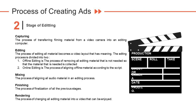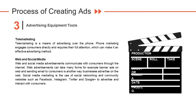The editing stage has five points. First is capturing — the process of transferring filming material from a video camera into an editing computer. Second is editing — the process of editing all materials into a meaningful video layout, divided into offline editing (removing unneeded material) and online editing (aligning offline material according to the script). Third is mixing — aligning all audio material in the editing process. Fourth is finishing — finalization of all previous stages. Fifth is rendering — changing all editing material into a final video.